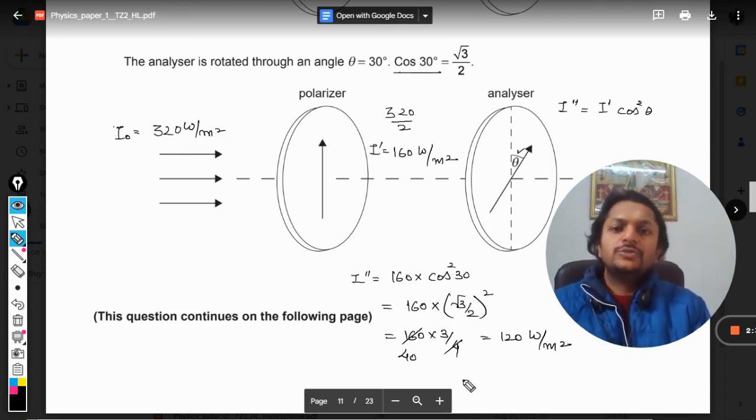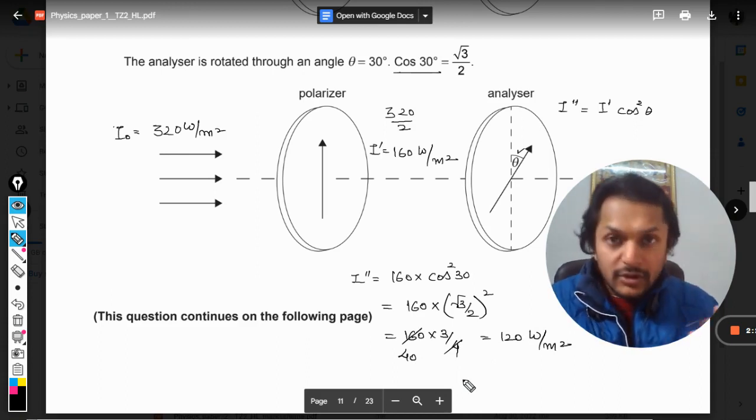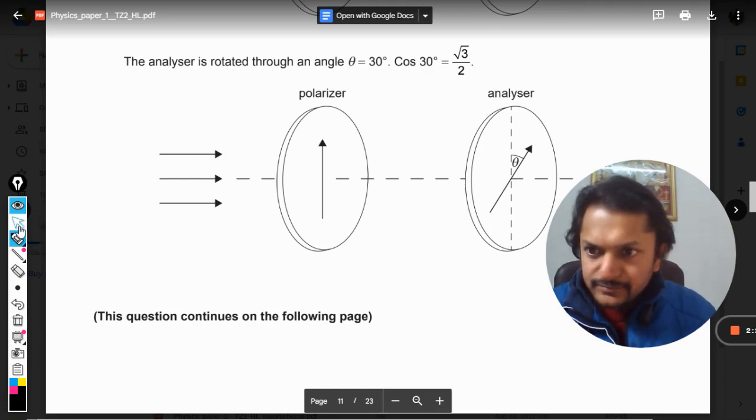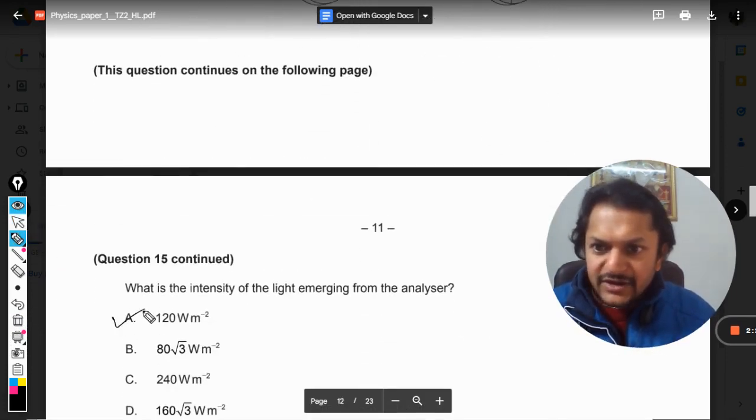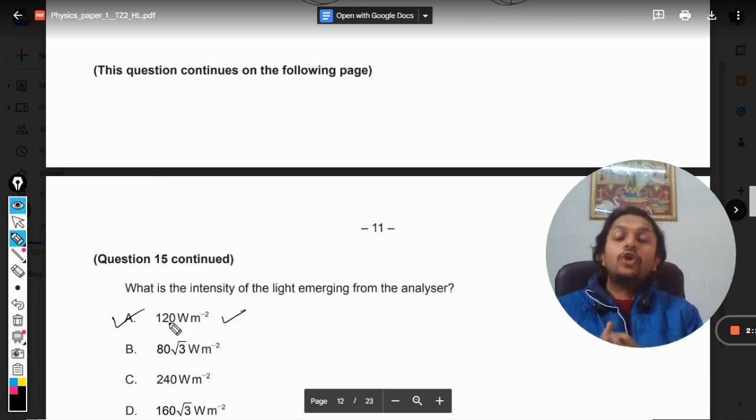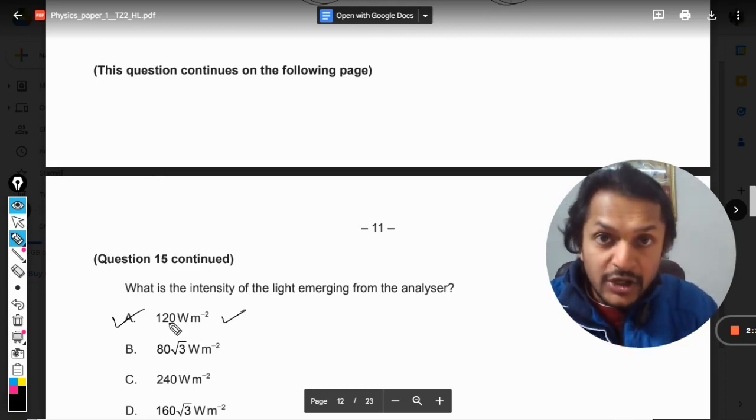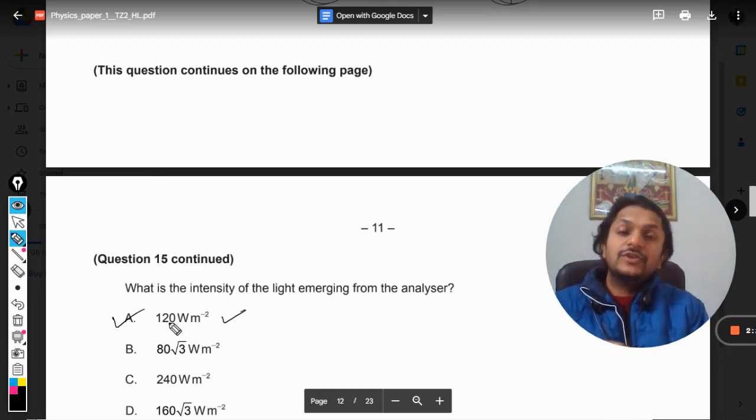Yes, this should be the correct answer. And now we will see the options. Yes, option A is the correct option, that is 120 watts per meter squared.